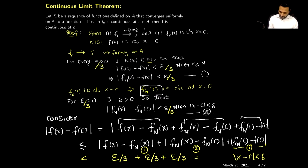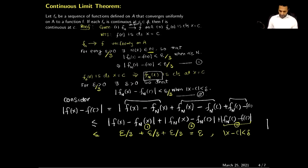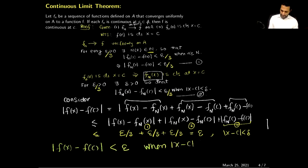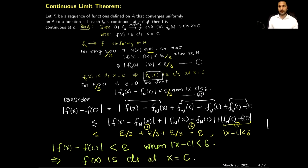With the choice of epsilon/3, the sum becomes less than or equal to epsilon, and this holds when |x - c| < delta. In summary, we have shown that |f(x) - f(c)| < epsilon when |x - c| < delta, and by the definition of continuity this implies f(x) is continuous at x = c. This completes the proof of our theorem: uniform convergence of a sequence of continuous functions guarantees the limit function is also continuous.